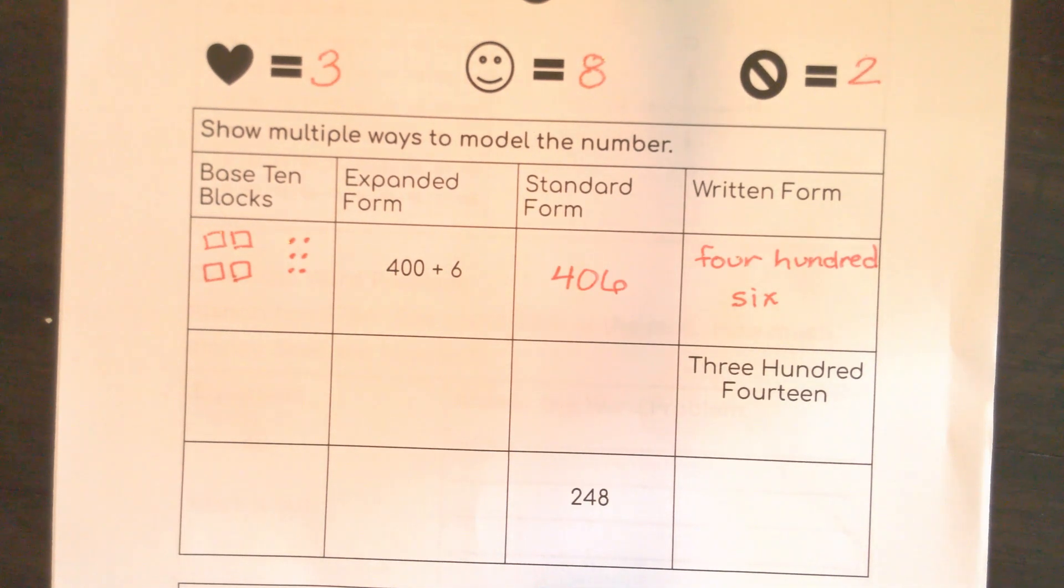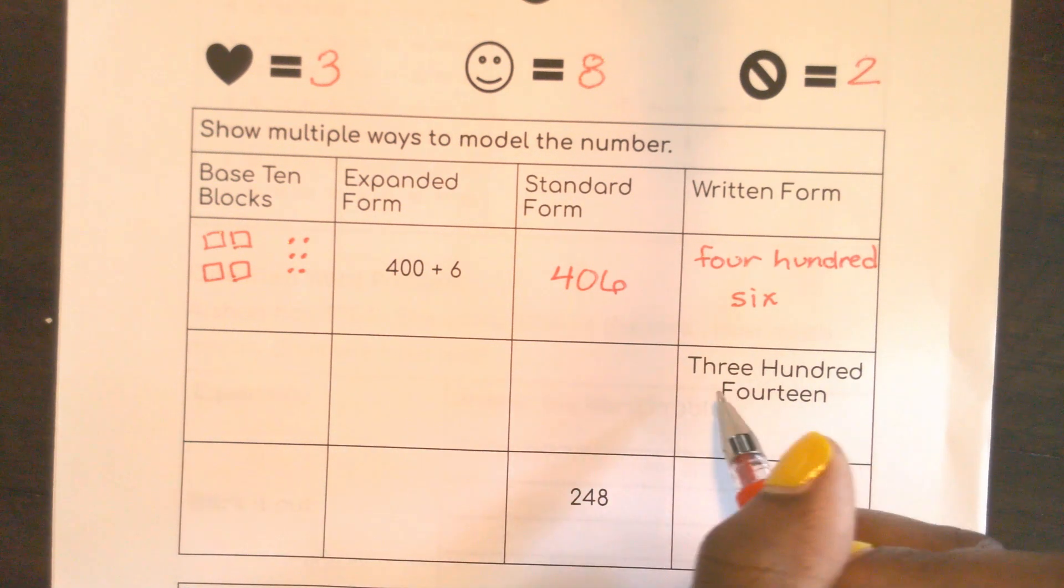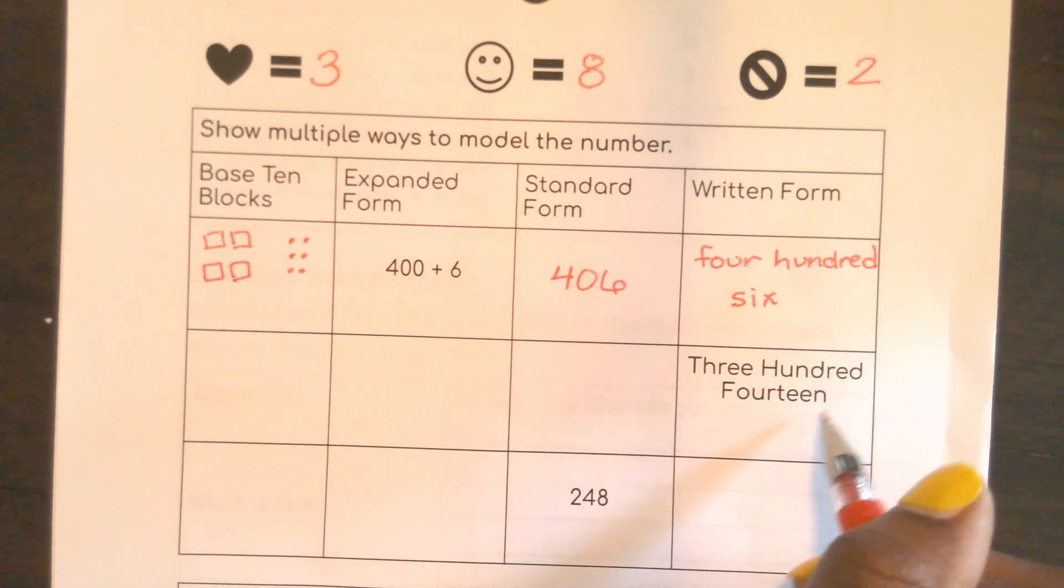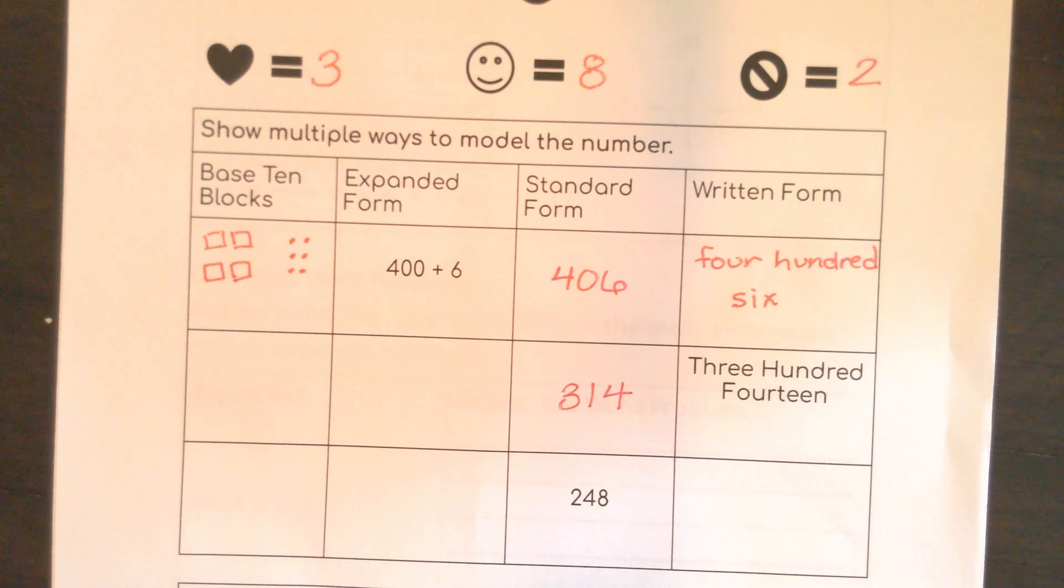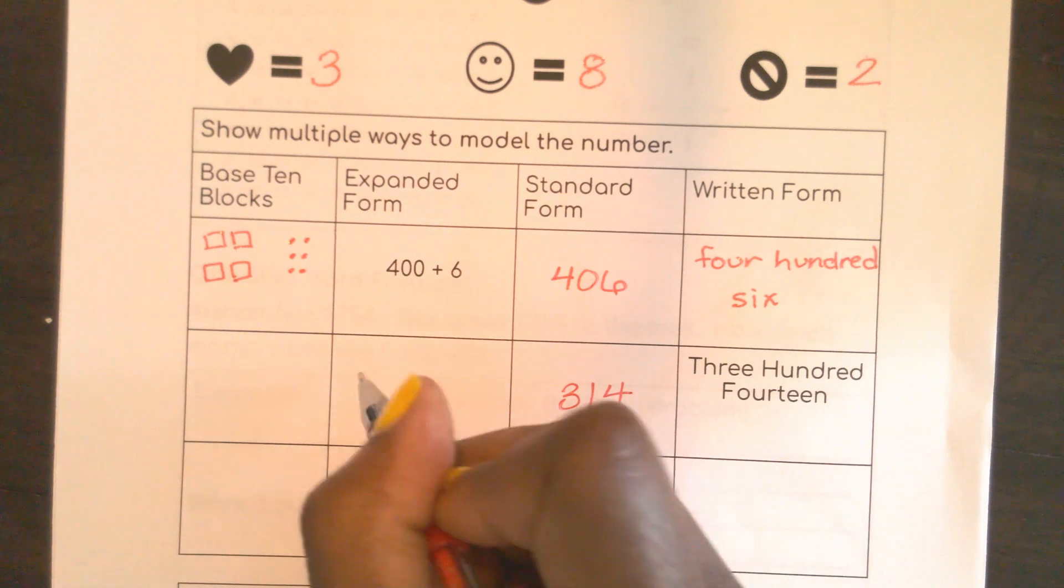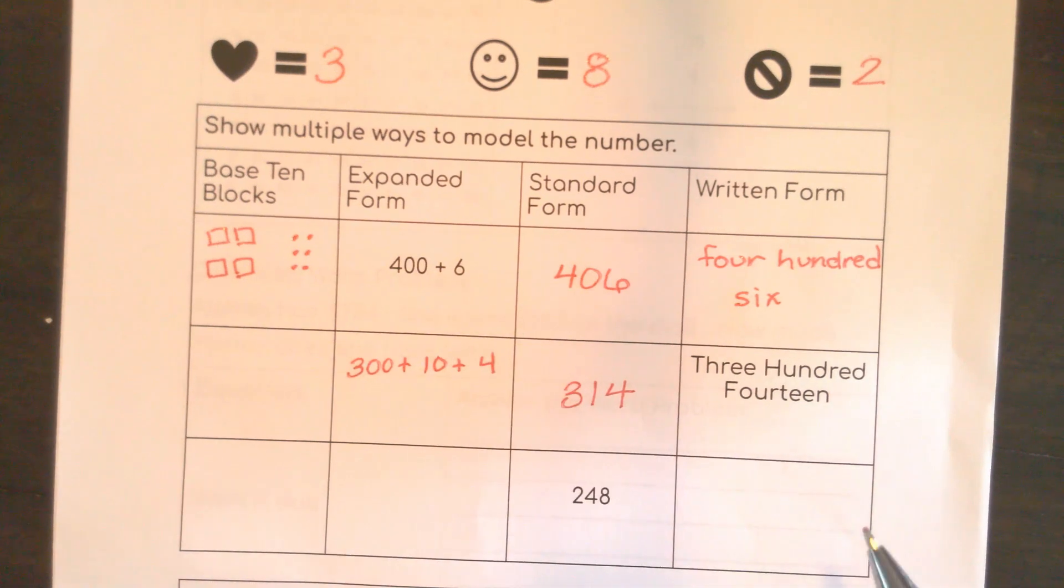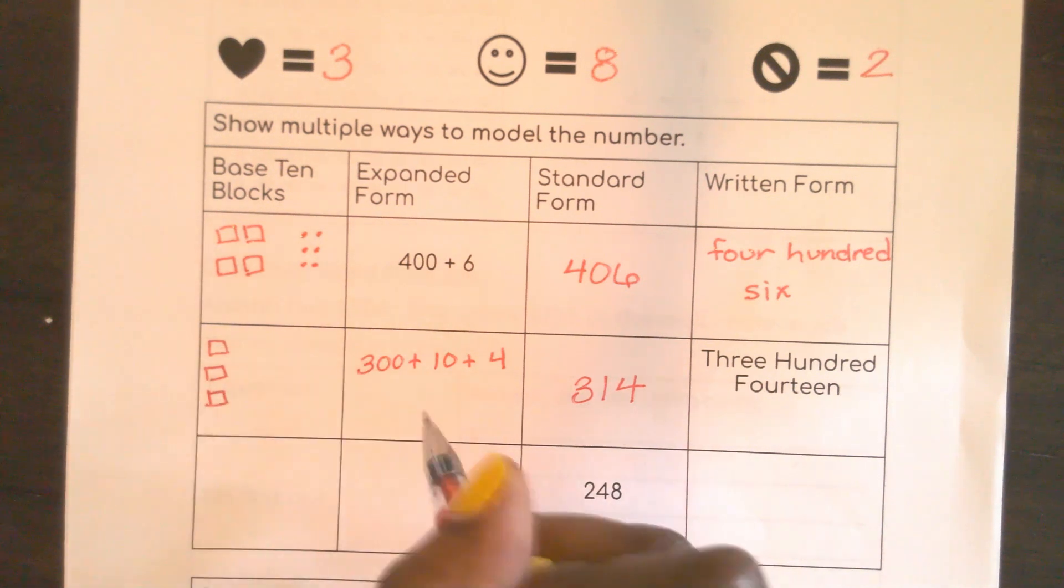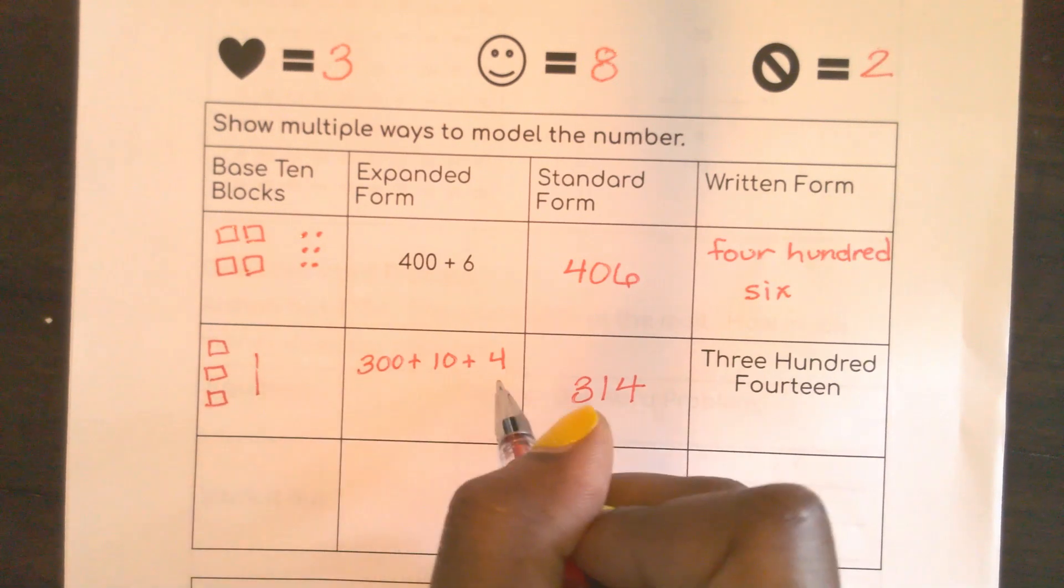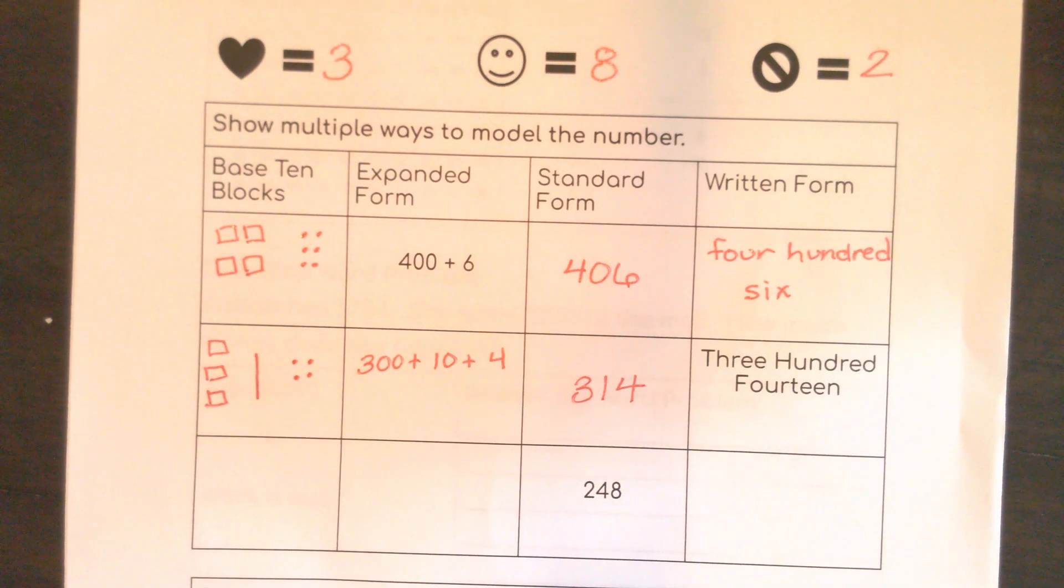So here we have 314 written in written form. So I know 14 is 10 and some ones. So I would have 300, 1 ten, and those are the ones for 14. 300 plus 10 plus 4 is 314. And with my base 10 blocks, I'll have 300, 1 ten, and 4 ones.